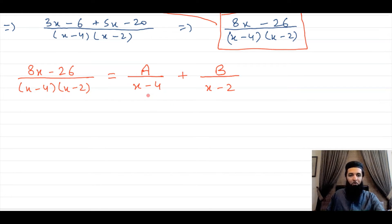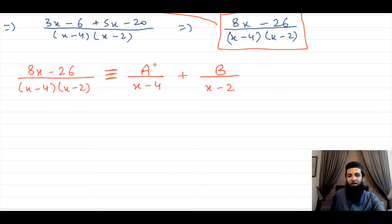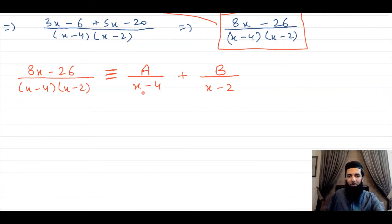There is an important point to note here: this is not just a simple equation — we represent this with an identity symbol. What that means is these two sides are identical to each other. It's an extra condition, and that means this equation has to hold for all values of x. If you put any value of x, these two sides should be equal to each other. That's a very important point.